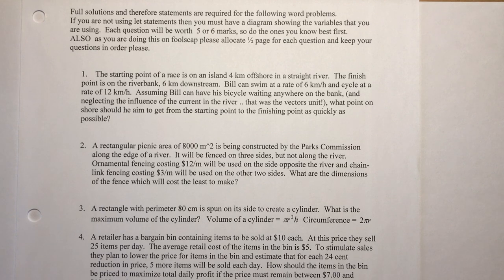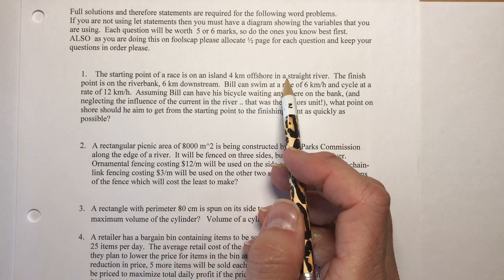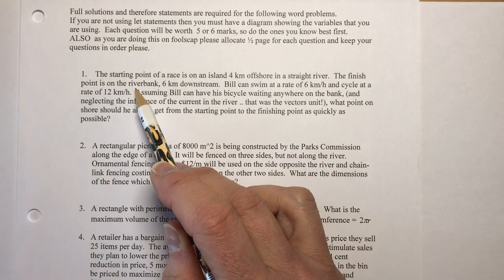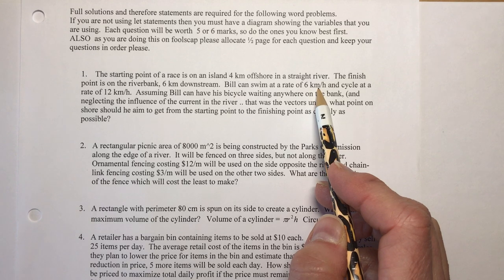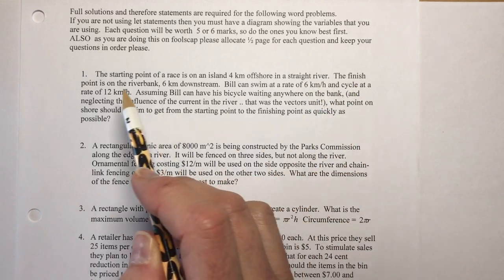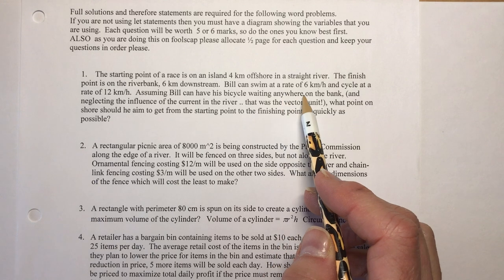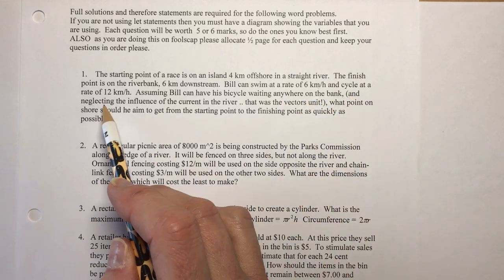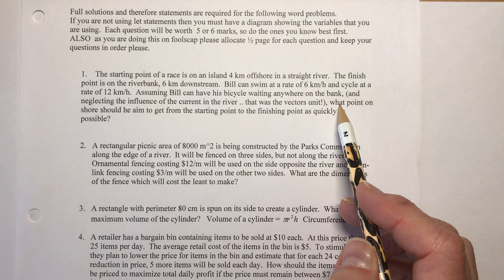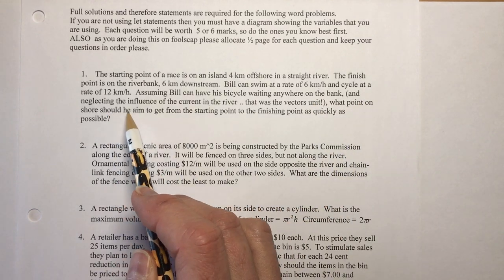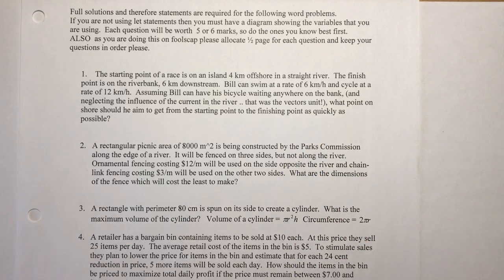The first question: the starting point of a race is on an island four kilometers offshore in a straight river. The finish point is on the riverbank six kilometers downstream. Bill can swim at six kilometers an hour and cycle at 12 kilometers an hour. Assuming Bill can have his bicycle waiting anywhere on the bank and neglecting the influence of the current, what point on the shore should he aim to get from the starting point to the finish as quickly as possible?